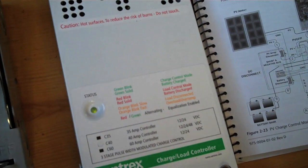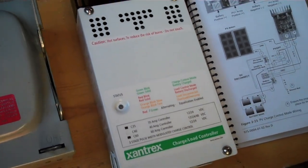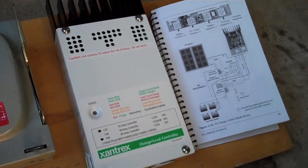On the charge controller, the green light is blinking just once, meaning the batteries are low, which is expected. These batteries are kind of cold. They've just been sitting in my garage right now.